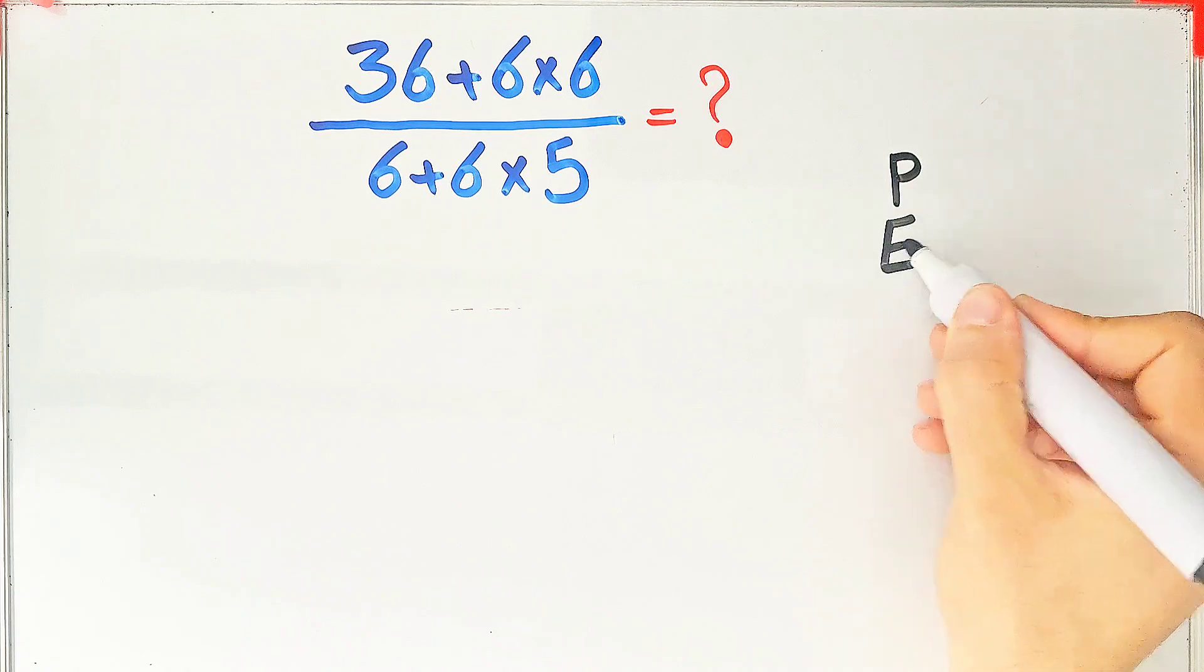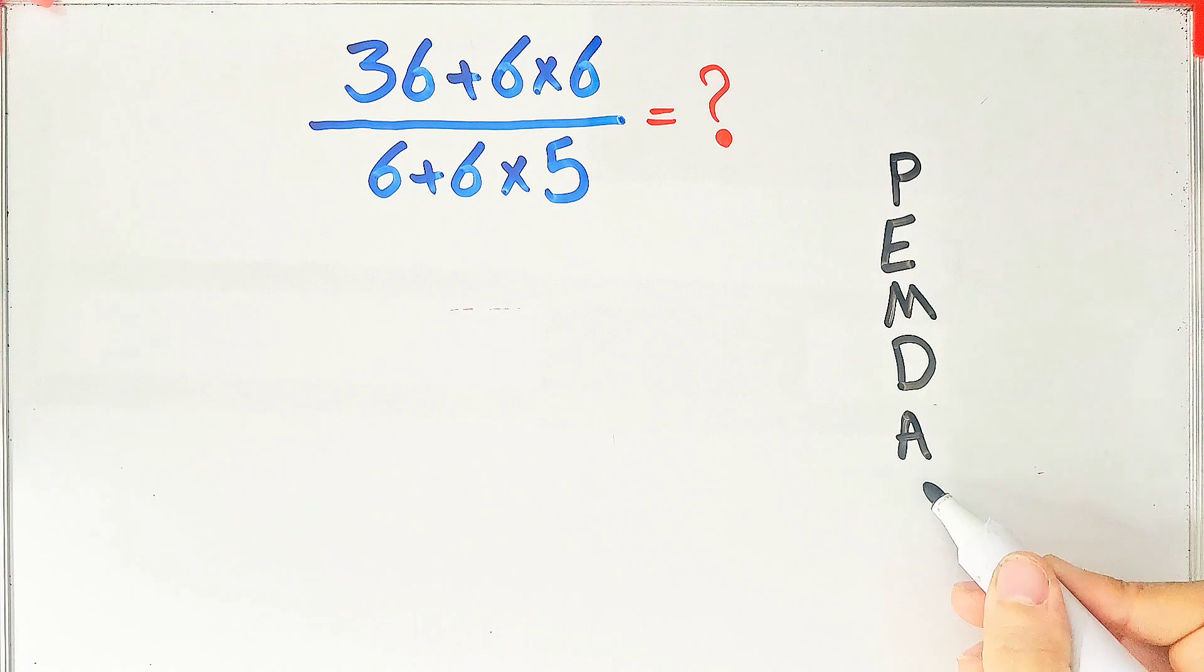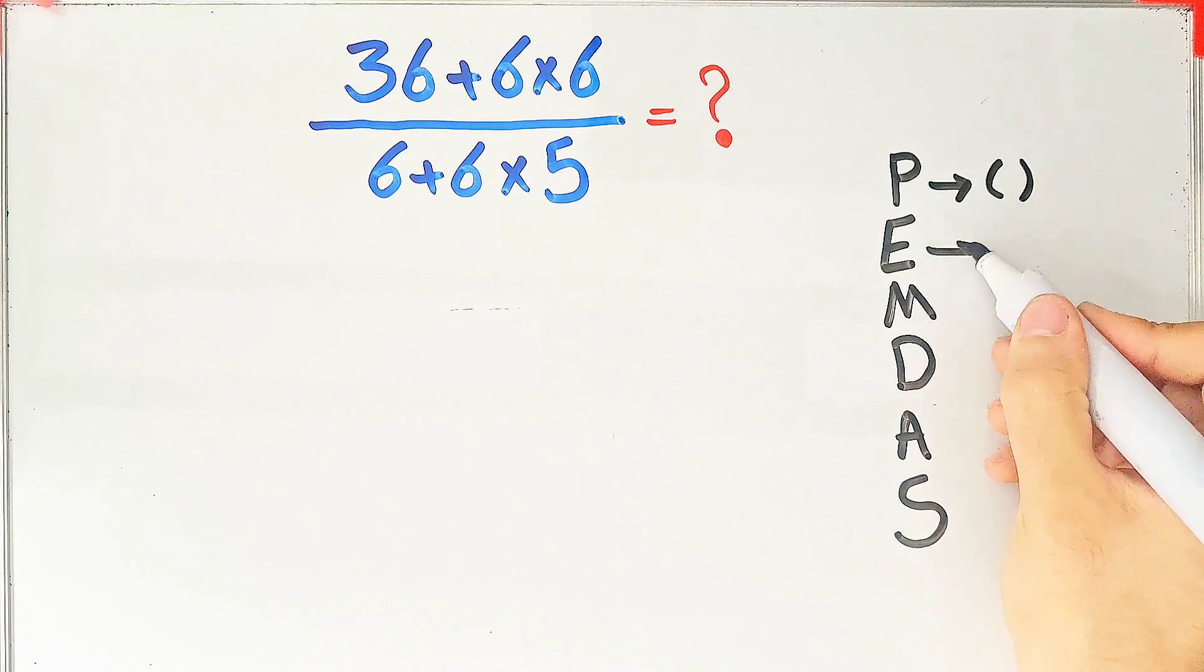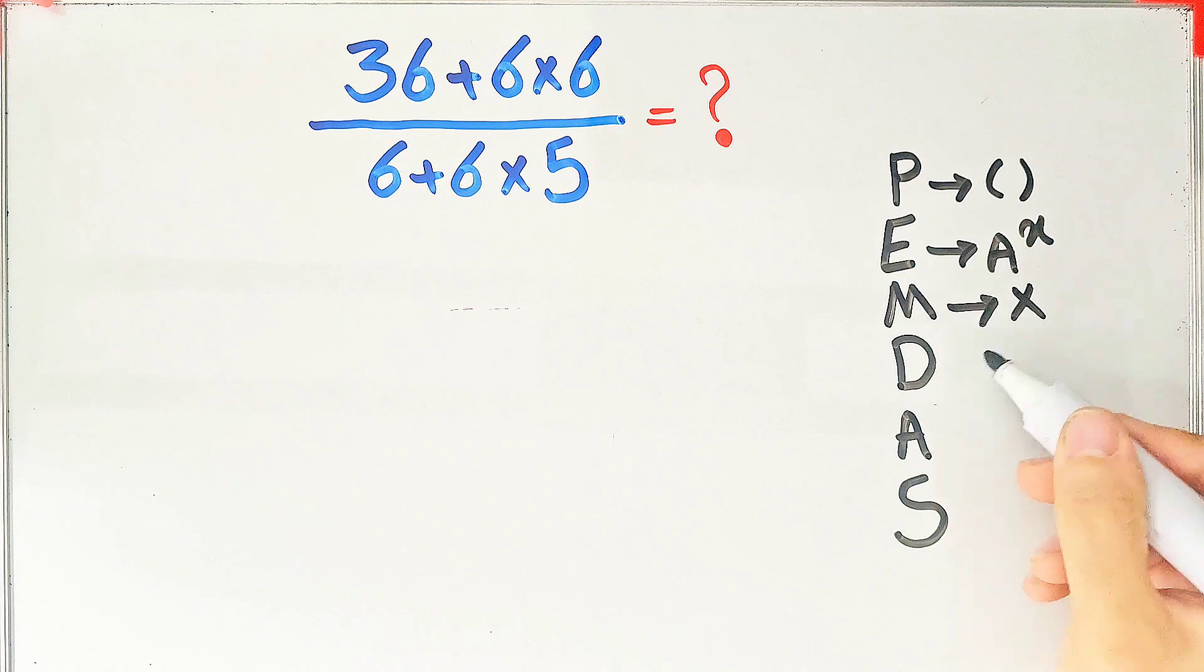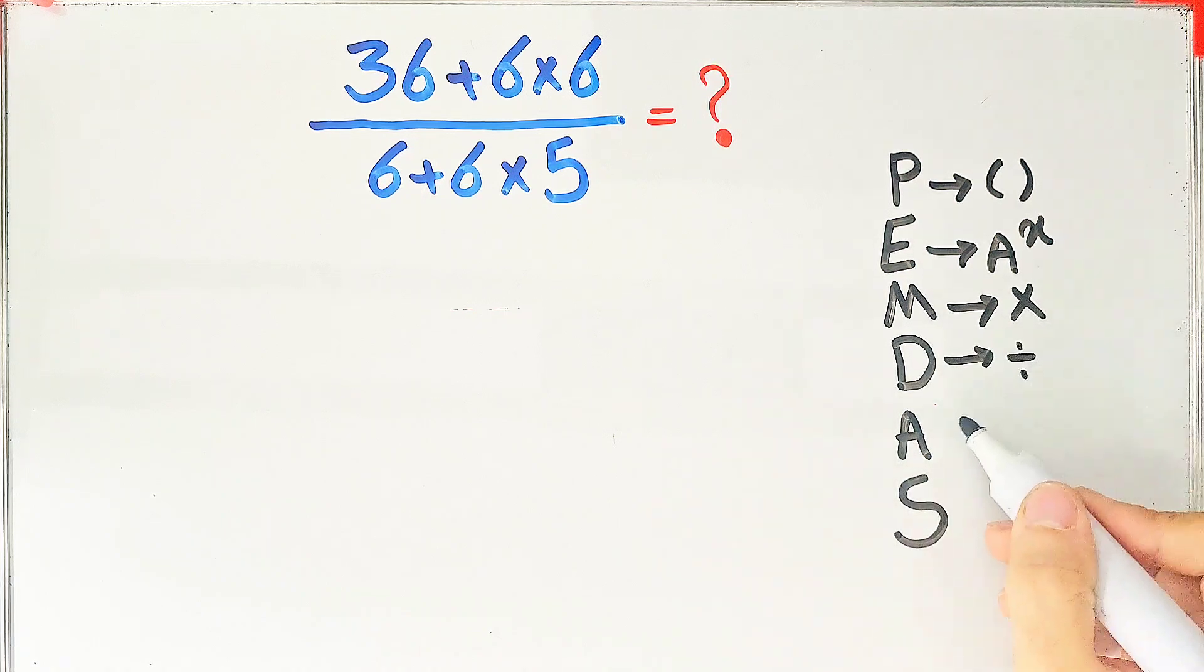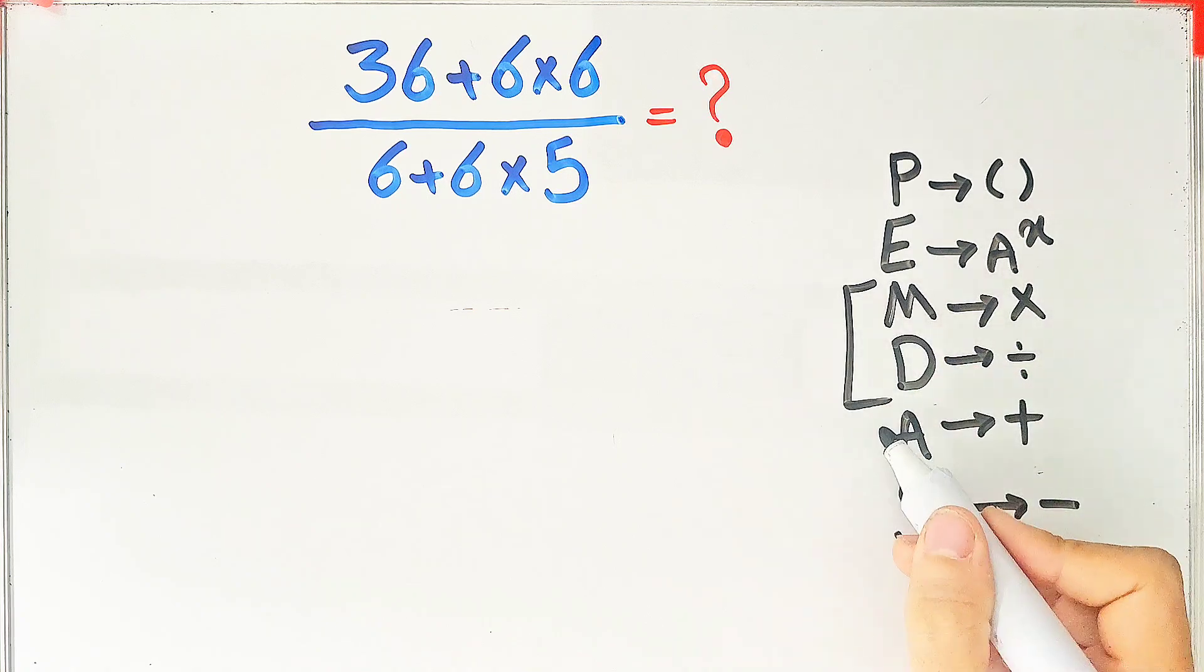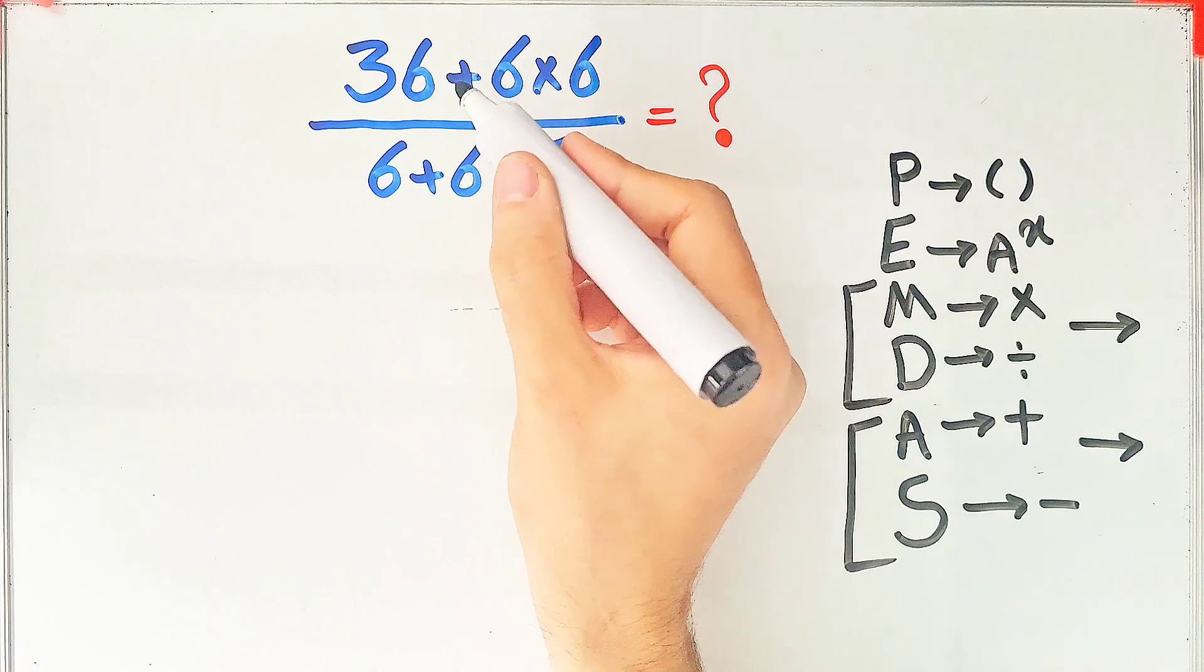PEMDAS shows the priority of the mathematical operations, and if you don't pay attention to this rule, you get the wrong answer. In this rule, P stands for parentheses, E stands for exponent, M stands for multiplication, D stands for division, A stands for addition, and S stands for subtraction. Multiplication and division have the same level of priority. Also, addition and subtraction have the same level of priority, and when we have both in an expression, we start from the left and simplify the question.